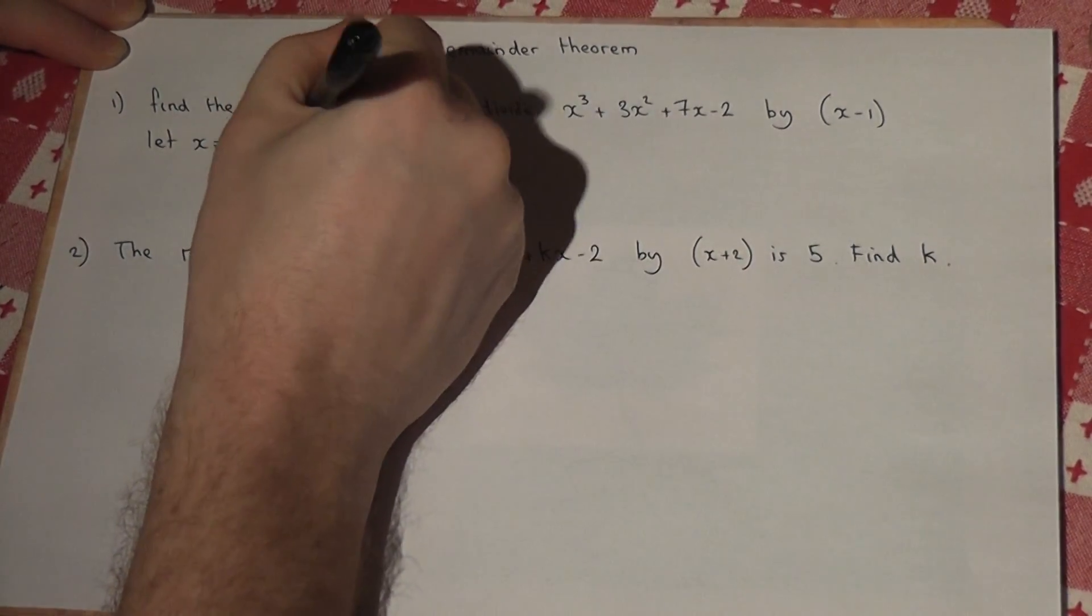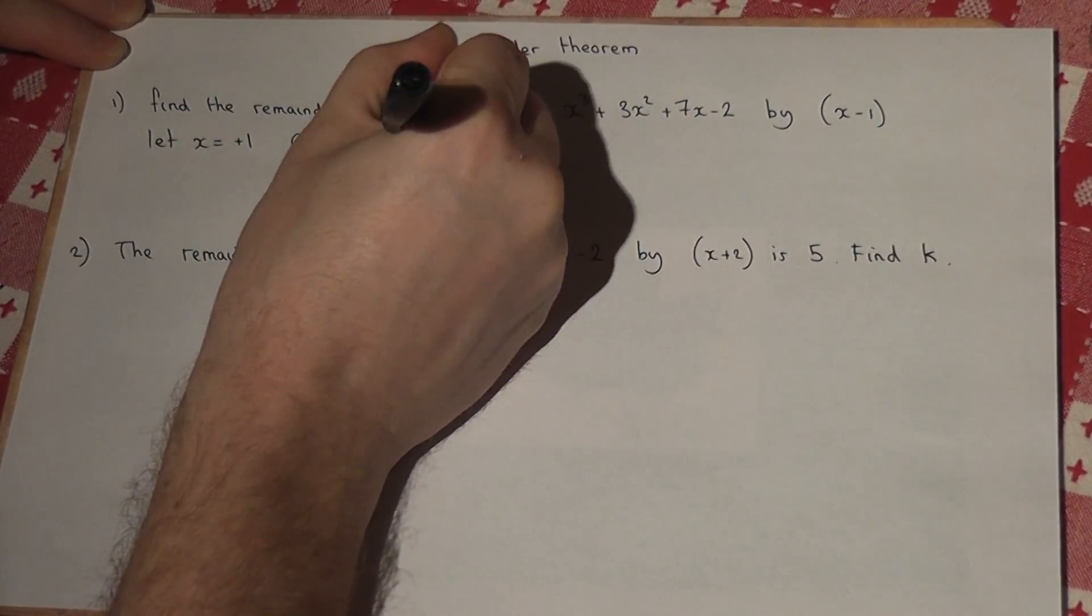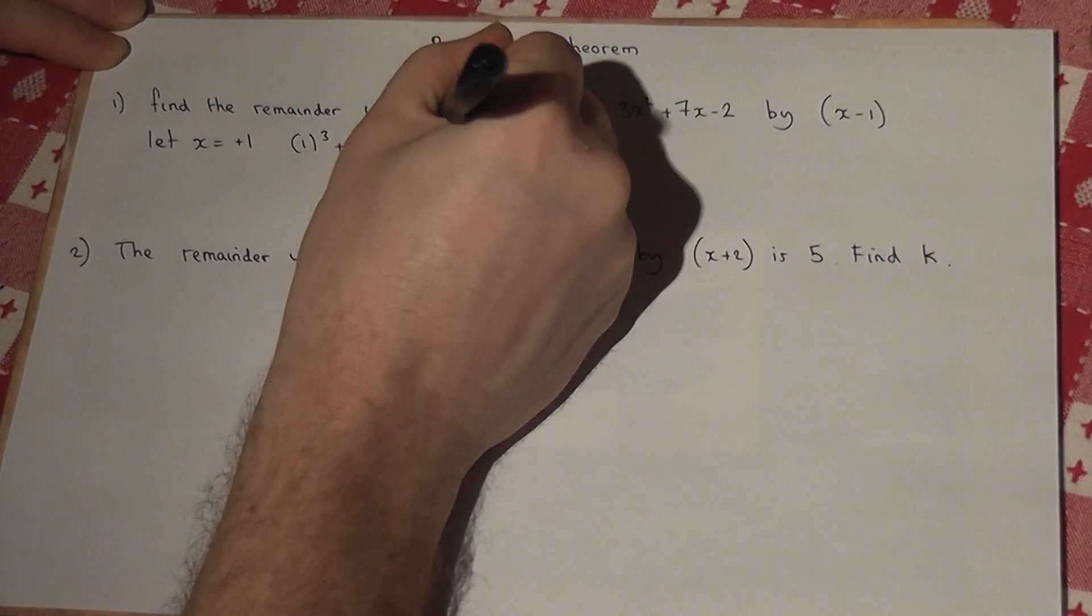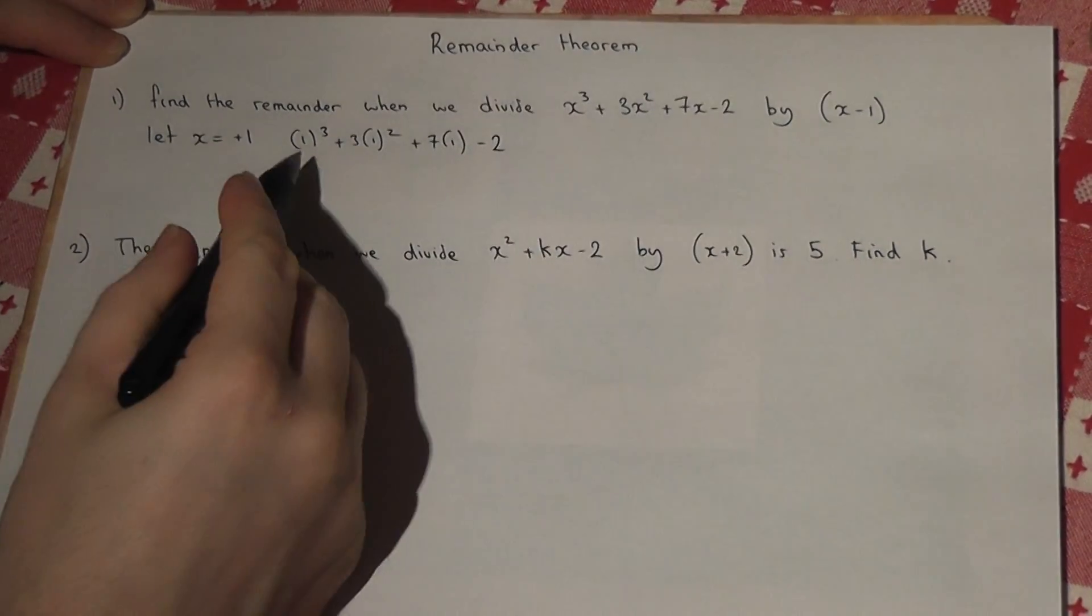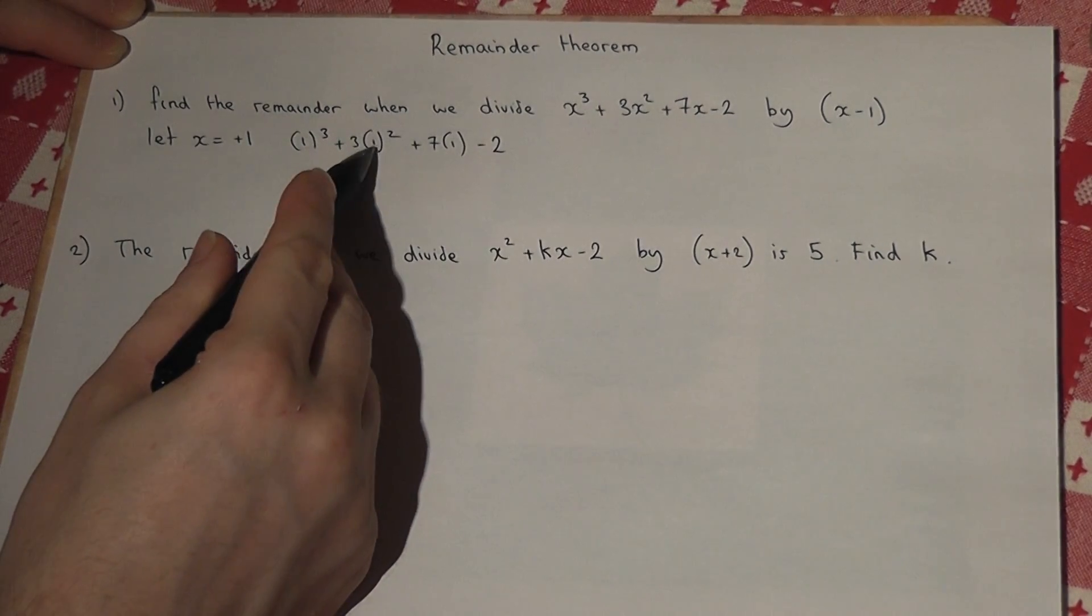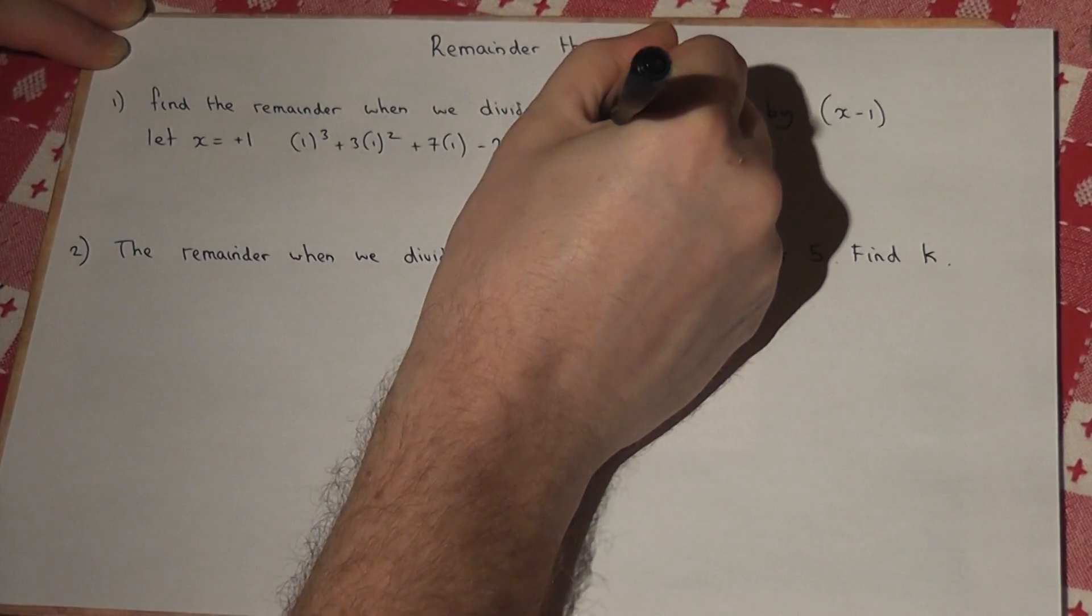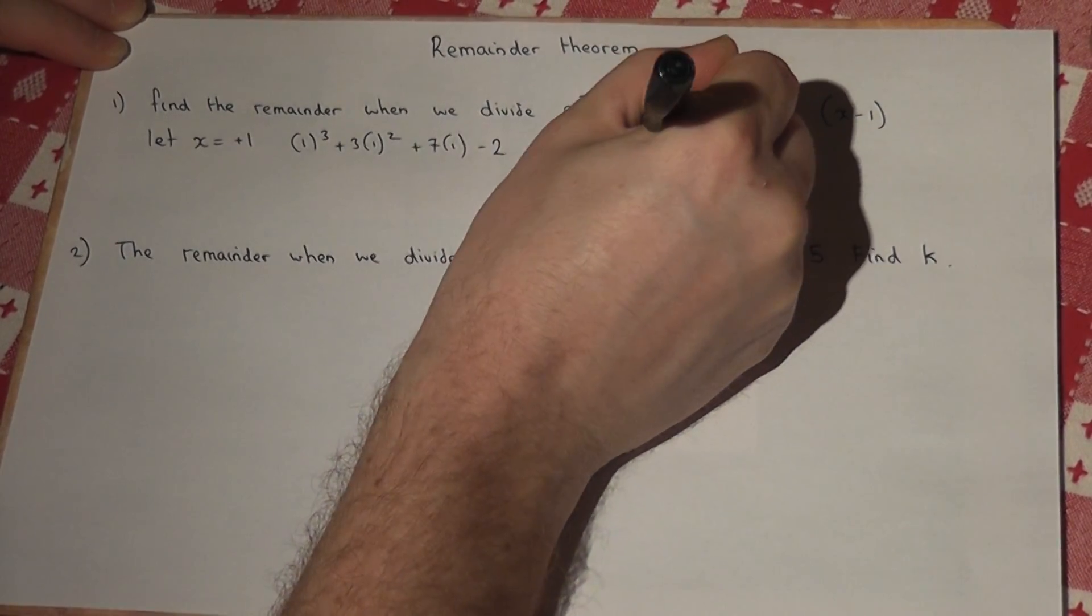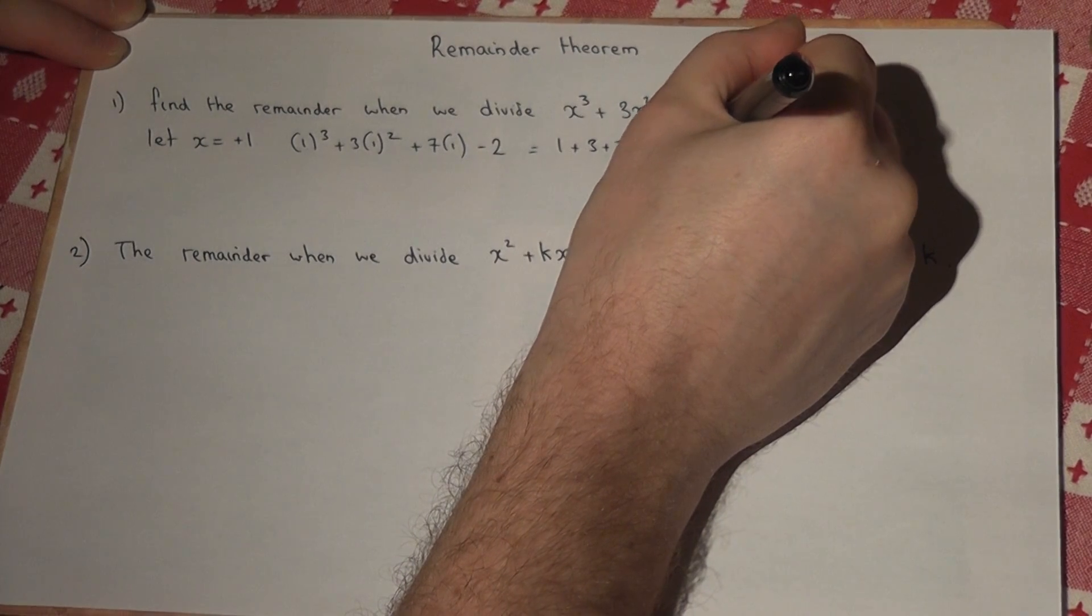So we work out 1 cubed plus 3 lots of 1 squared plus 7 lots of 1, take away 2. So that's 1 plus 3 times 1 plus 7 take away 2, 1 plus 3 plus 7 take away 2, the answer just equals 9.